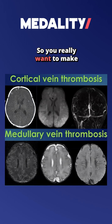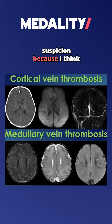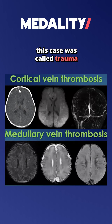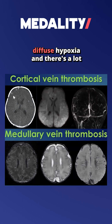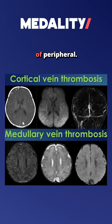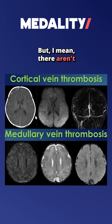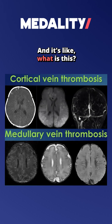So you really want to make sure that this is a high level of suspicion, because I think this case was called trauma by an adult radiologist. And it's like, yes, there is diffuse hypoxia and there's a lot of peripheral findings, but there aren't any subdurals. What is this?